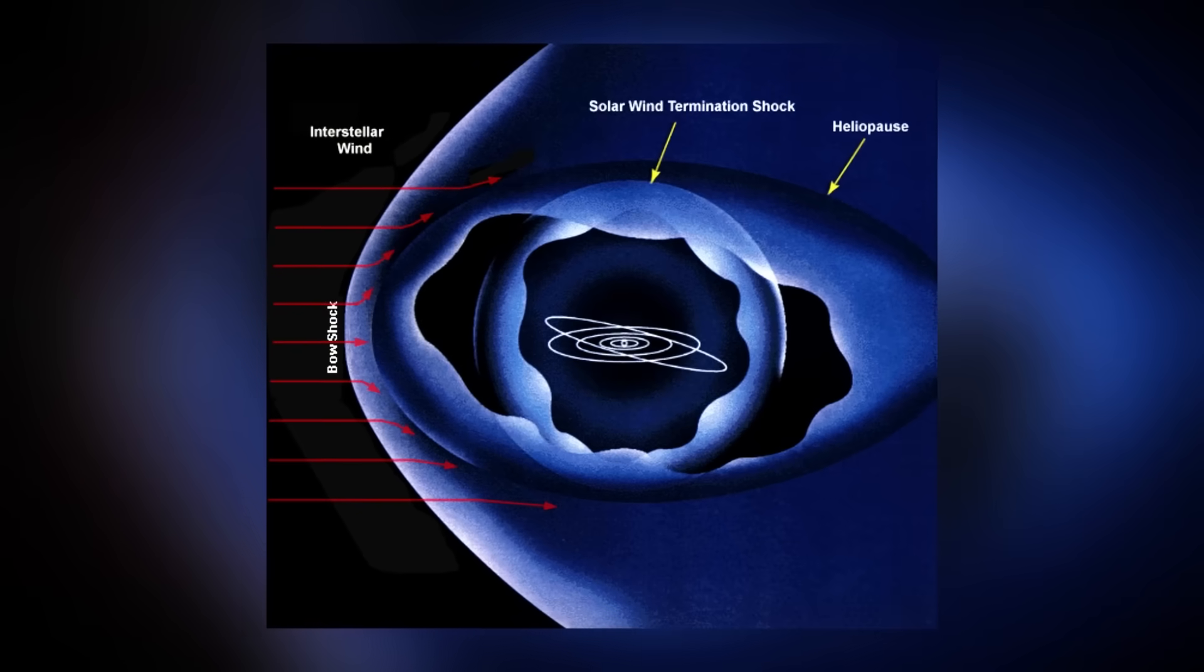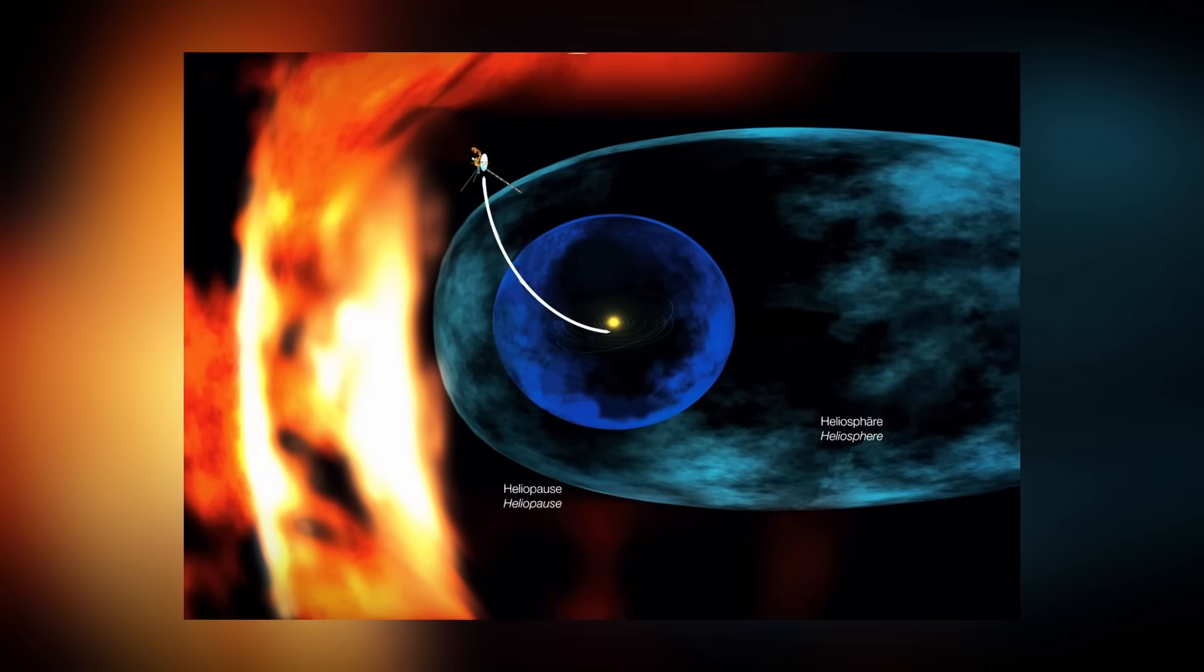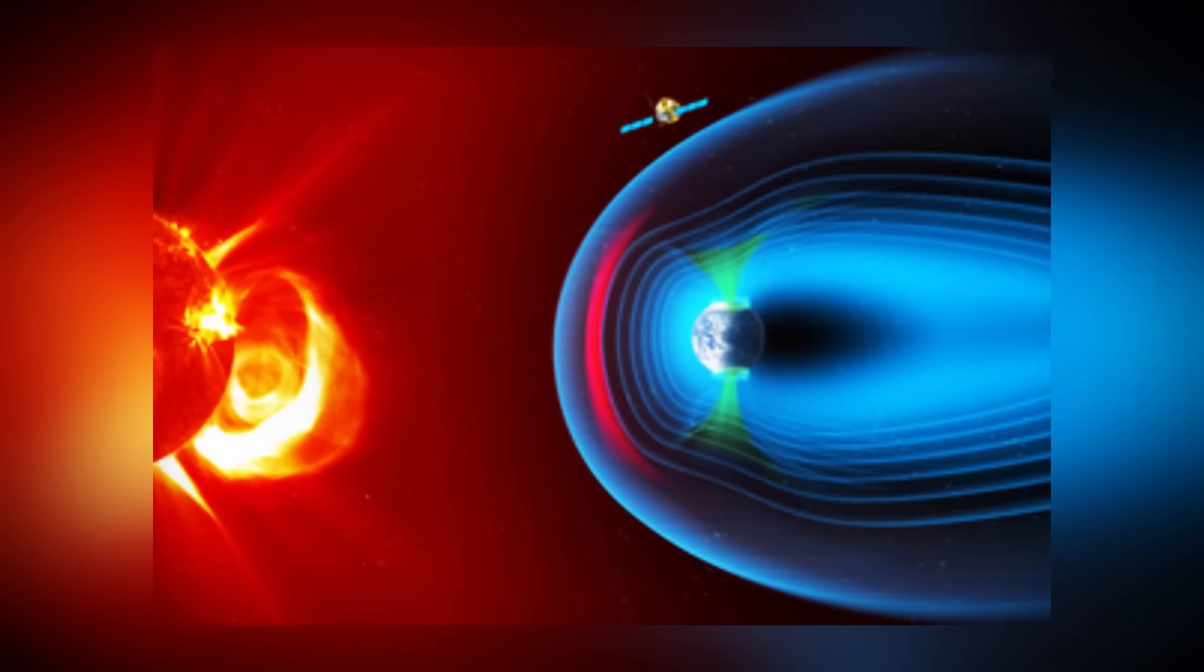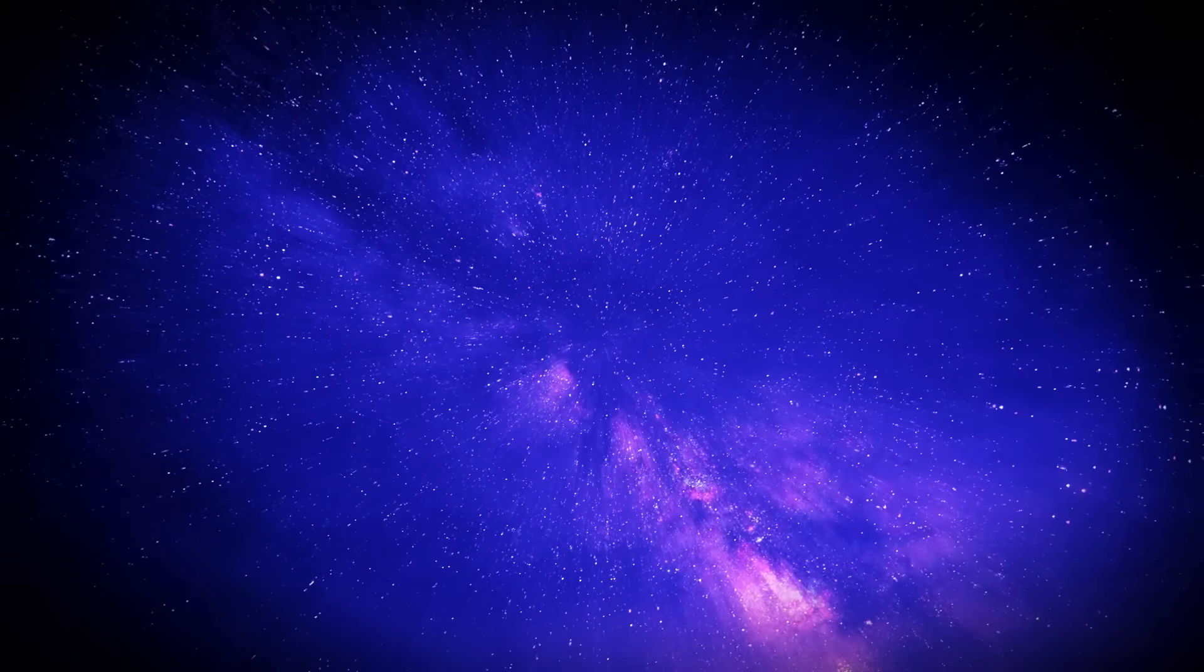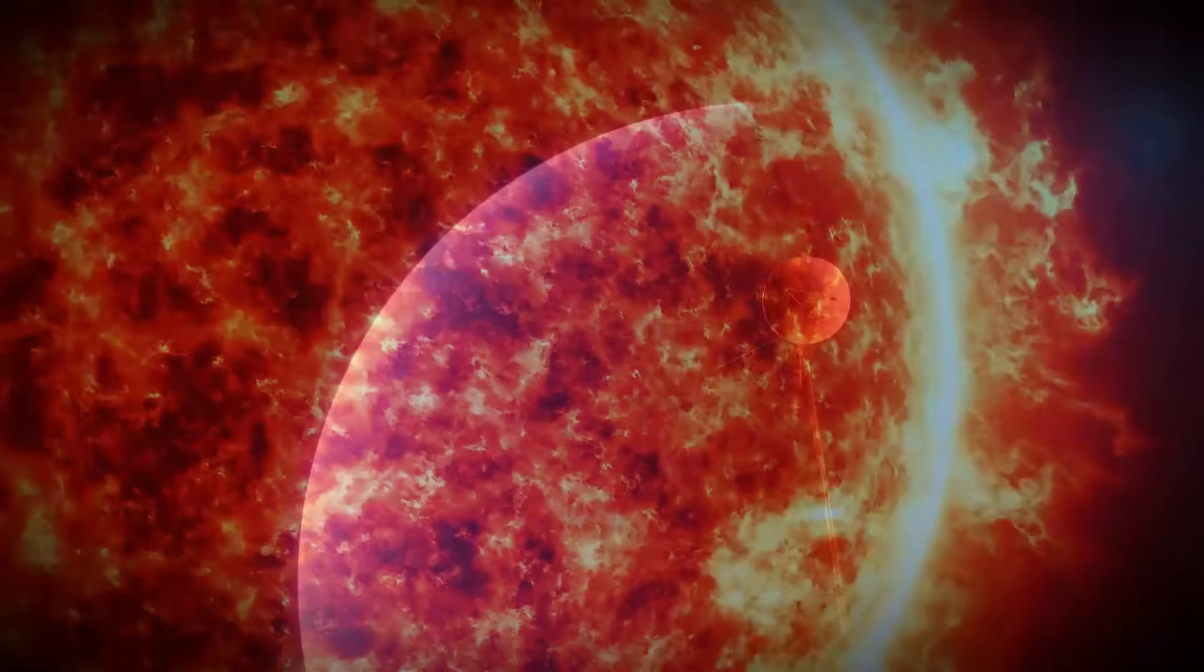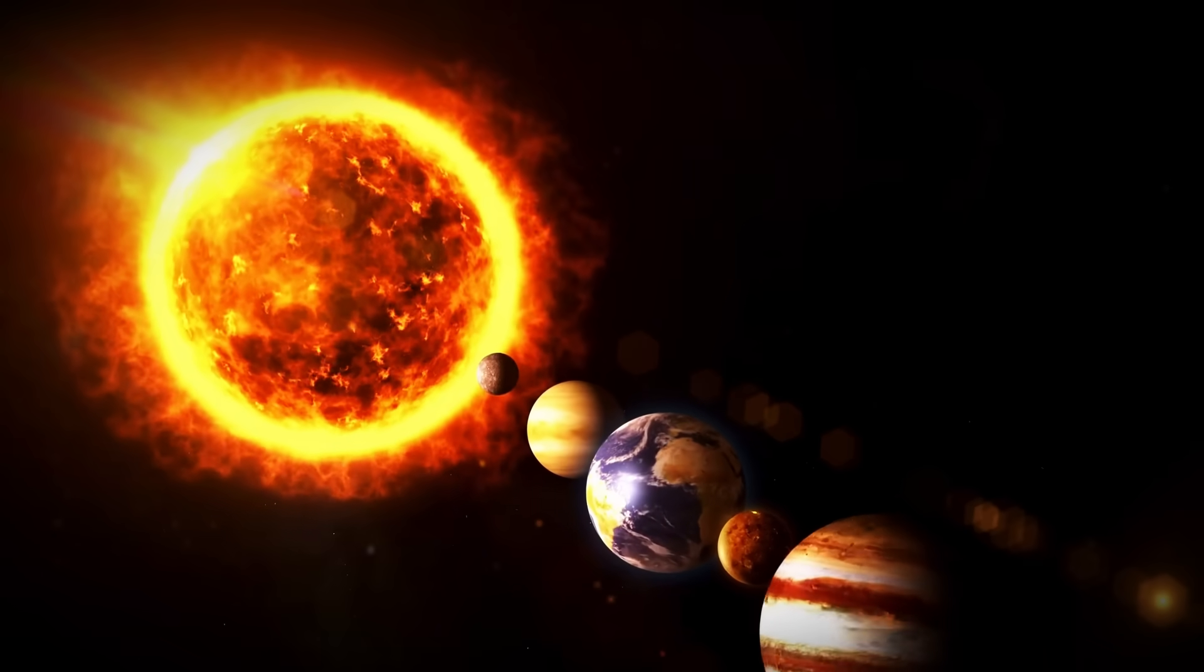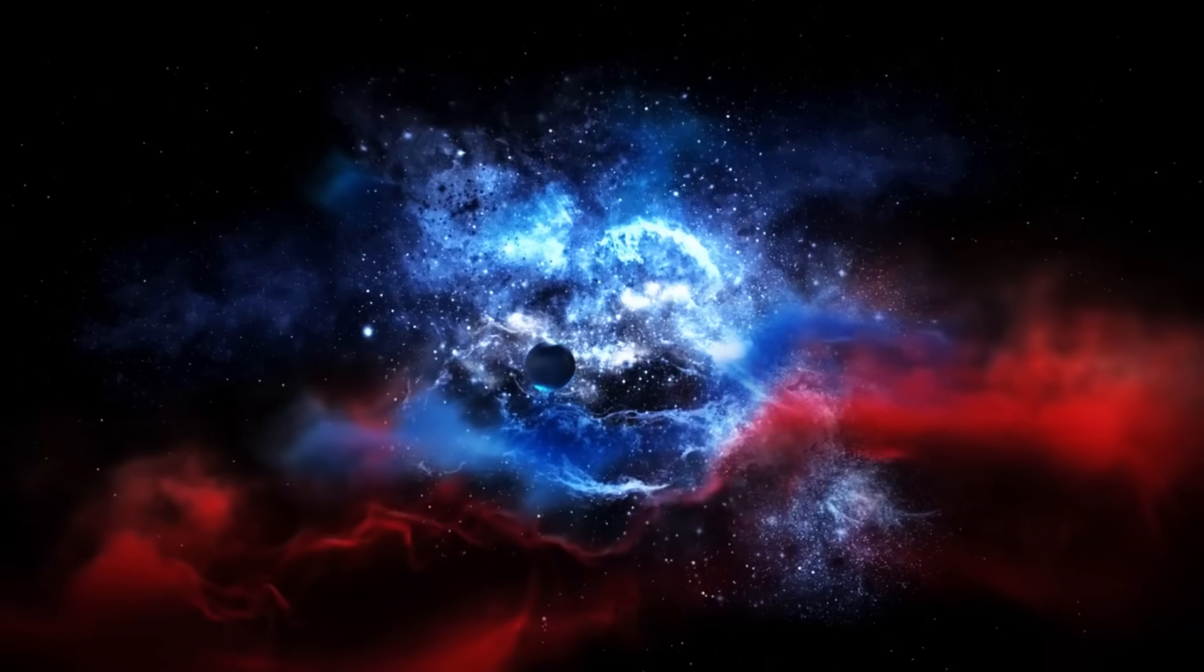Upon crossing the heliopause, Voyager 2 entered interstellar space, providing a unique window into this vast and unexplored region. Voyager 2 began examining the characteristics of the interstellar medium, contrasting it with the solar wind's hot, low-density plasma. It discovered a chilly, dense plasma environment, providing a unique window into the interstellar medium's characteristics and revealing hints about the galaxy's genesis and development. This discovery aids our comprehension of the sun's protective bubble and its interactions with the surrounding environment. Such information is crucial for understanding the universe beyond our solar system and for future space missions.